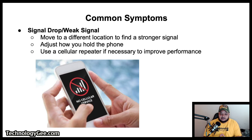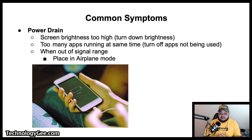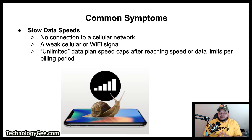Next is power drain. If a device has the screen brightness maxed out and too many apps running at the same time, that could result in power drain. To mitigate this, dim the screen brightness and close apps that are not being used. When the cellular device is out of range of a signal, placing it into airplane mode will also help minimize power drain.